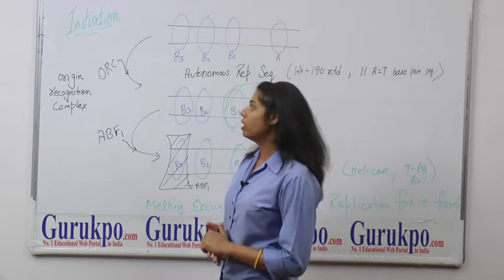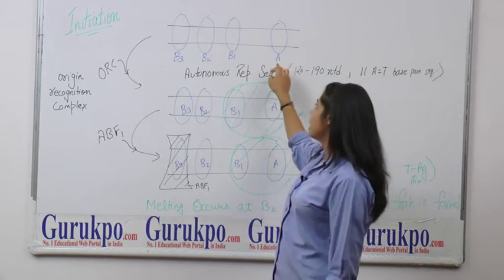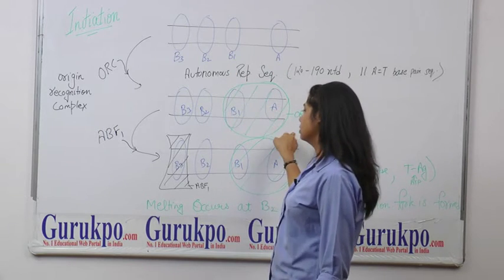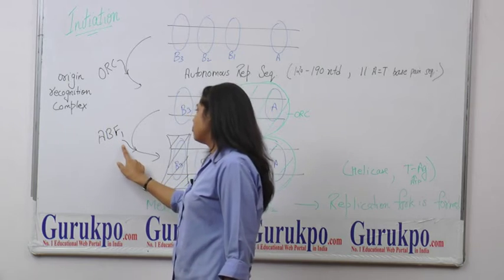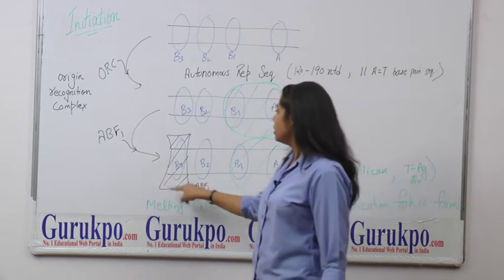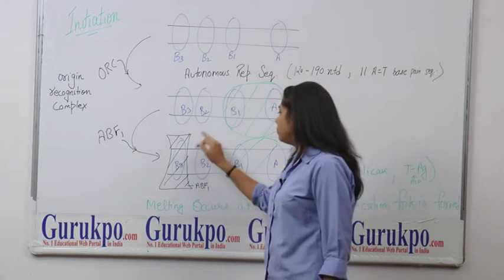After that, the origin recognition complex which recognizes this ori binds at A and B1 complex. After this, one more factor that is ABF1 binds to the B3 complex. Due to this binding, the melting occurs at B2.